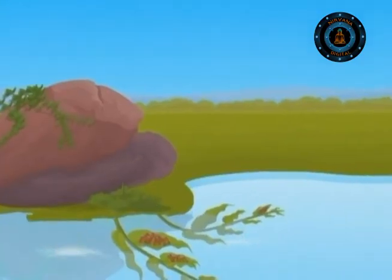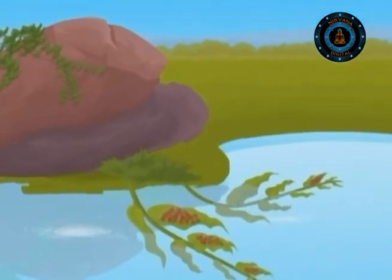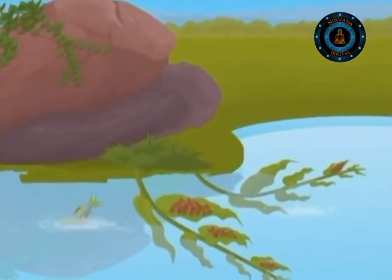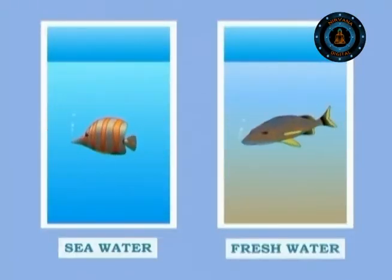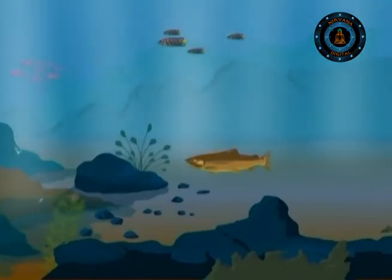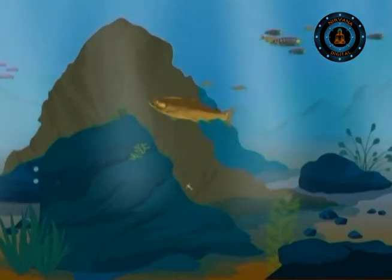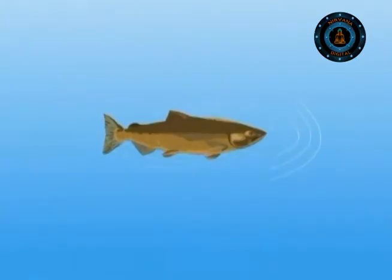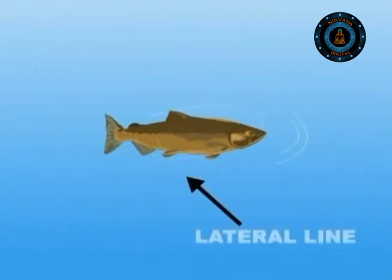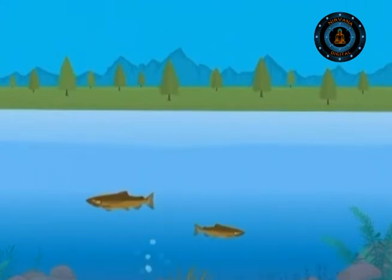A fish called the splash tetra even leaps out of the water to lay eggs on overhanging leaves. In comparison to the sea, freshwater can be muddy with low visibility. But freshwater fish have a superb array of sensory organs to help them navigate. Like all fish, they have a vibration-detecting system called a lateral line running down each side of the body, which can feel the ripples made by other moving objects, giving a sense of touch at a distance.